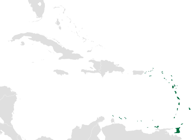The Lesser Antilles are divided into eight independent nations and numerous dependent and non-sovereign states which are politically associated with the United Kingdom, France, the Netherlands, and the United States. Over one-third of the total area and population of the Lesser Antilles lies within Trinidad and Tobago, a sovereign nation comprising the two southernmost islands of the Windward Island chain.